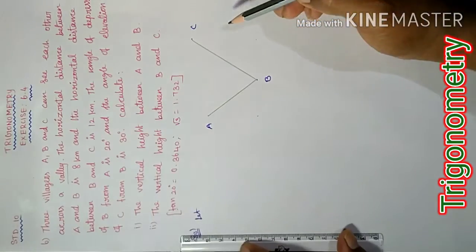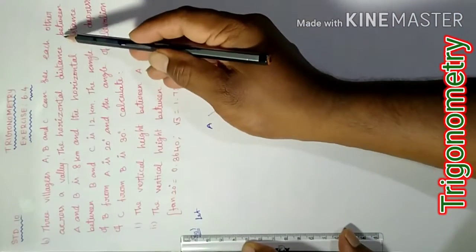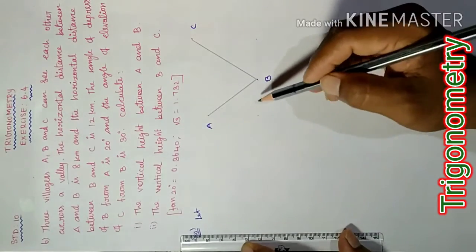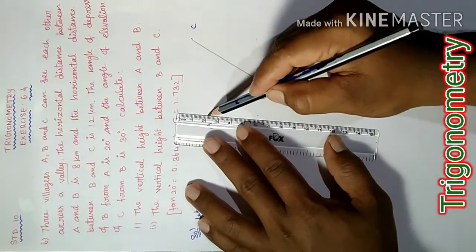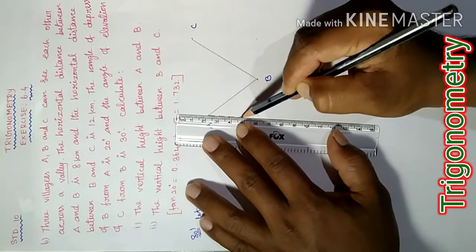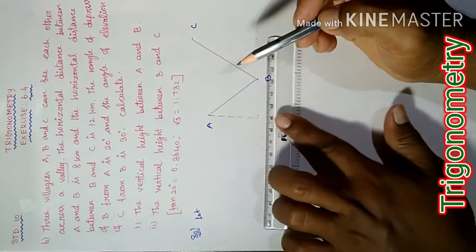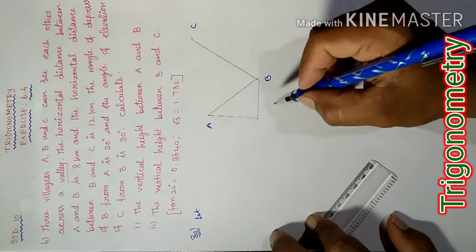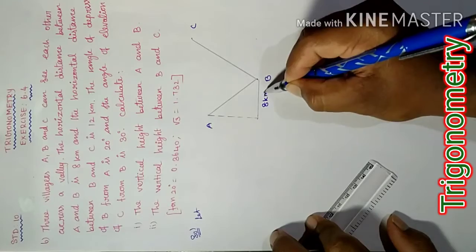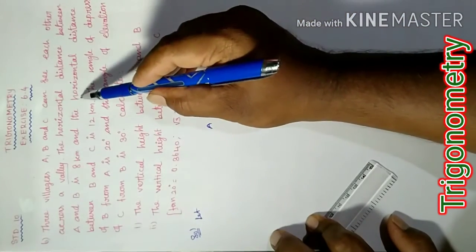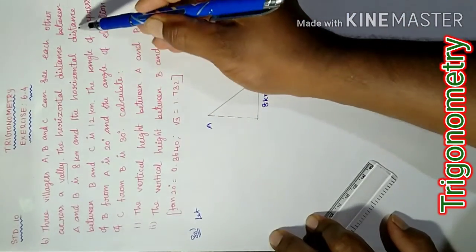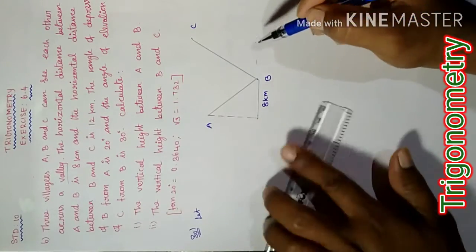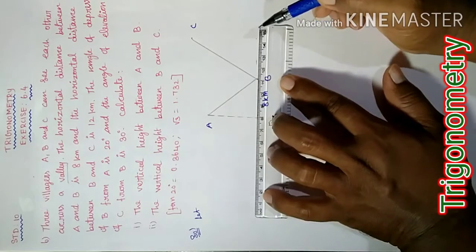The horizontal distance between A and B - this is the horizontal line. I will drop this line. Now horizontal line, the distance is 12 km.